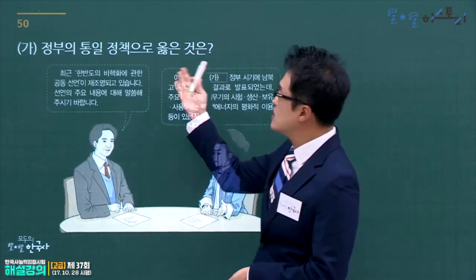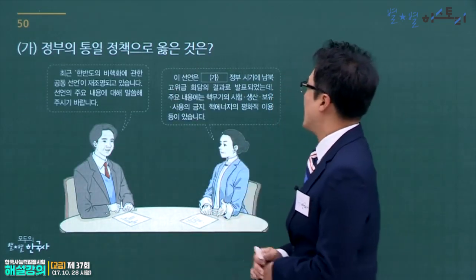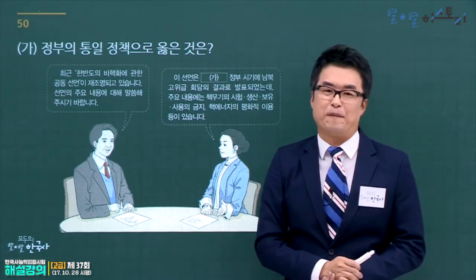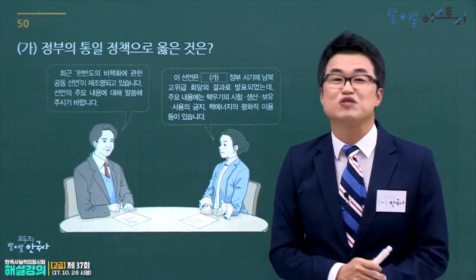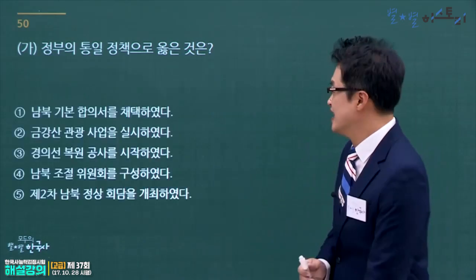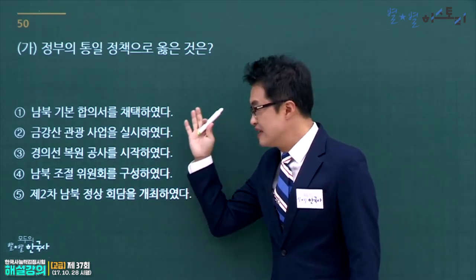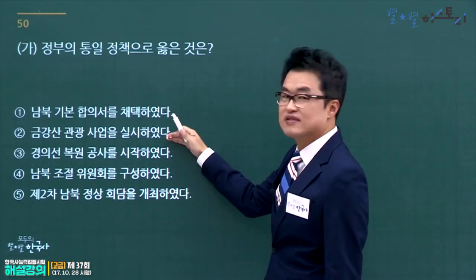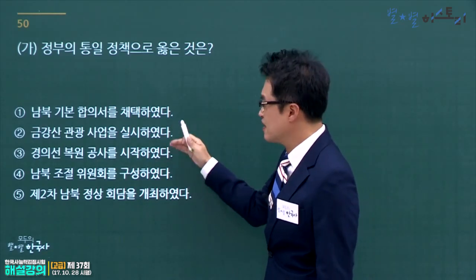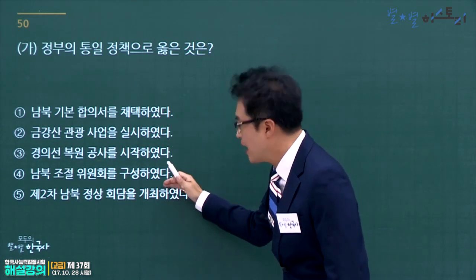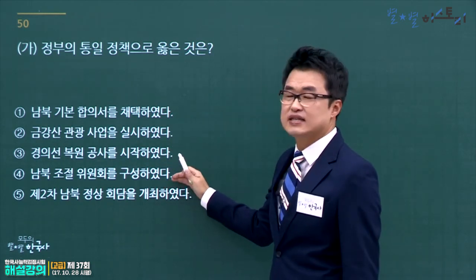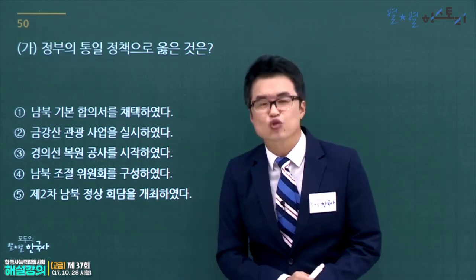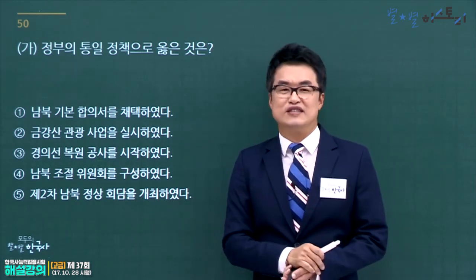한반도 비핵화, 남북 고위급회담은 노태우 정부와 연결됩니다. 남북기본합의서 채택이 노태우 정부 때 이루어졌으므로 정답은 1번입니다. 금강산 관광사업·경의선 복원은 김대중 정부, 남북조절위원회와 7·4남북공동성명은 박정희 정부, 2차 남북정상회담은 노무현 정부입니다.